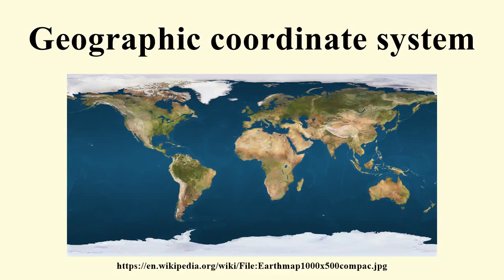The zero-zero point of this system is located in the Gulf of Guinea about 625 km south of Tema, Ghana. To completely specify a location of a topographical feature on, in, or above the Earth, one must also specify the vertical distance from the center or surface of the Earth. The Earth is not a sphere but an irregular shape approximating a biaxial ellipsoid — nearly spherical, but with an equatorial bulge making the radius at the equator about 0.3% larger than the radius measured through the poles.